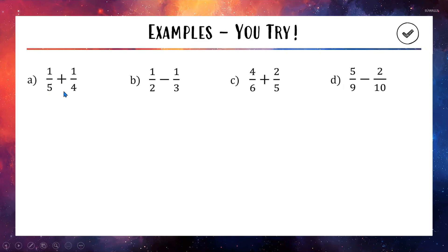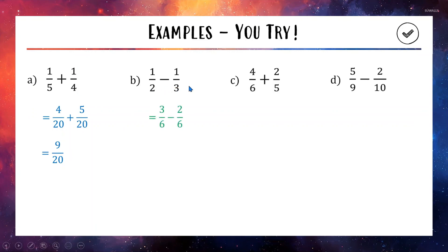For A: 5 and 4 both go into 20, so we write them out of 20. First fraction multiplied top and bottom by 4 gives 4 out of 20. Second fraction multiplied by 5 gives 5 out of 20. With base 20, 4 plus 5 is 9, so the answer is 9 out of 20. For B: both 2 and 3 go into 6. Multiplying top and bottom by 3 gives 3 out of 6 for 1 half, and 1 third becomes 2 out of 6. Then 3 minus 2 is 1, giving 1 out of 6.